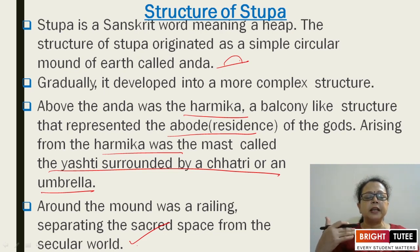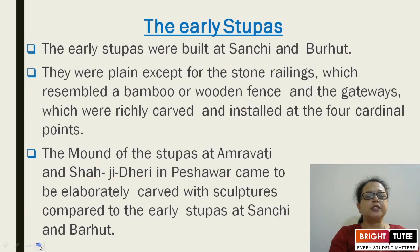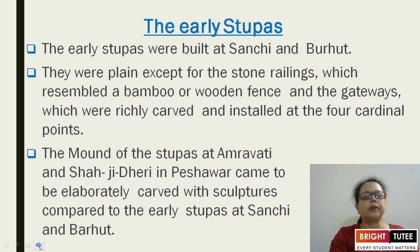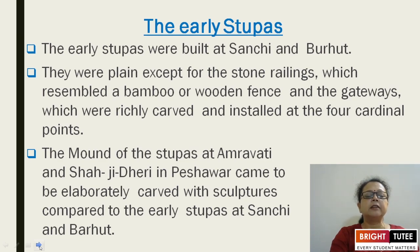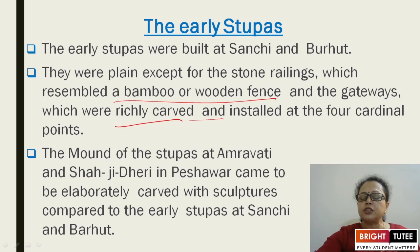The railing was an important part of stupa construction. The early stupas were built at Sanchi and Barhut. They were plain except for the stone railings, which resembled a bamboo or wooden fence. The gateways were richly carved and installed at the four cardinal points.